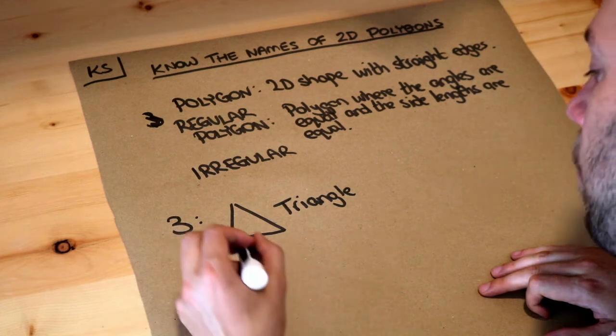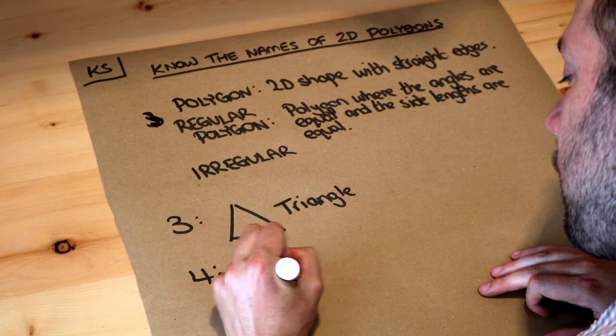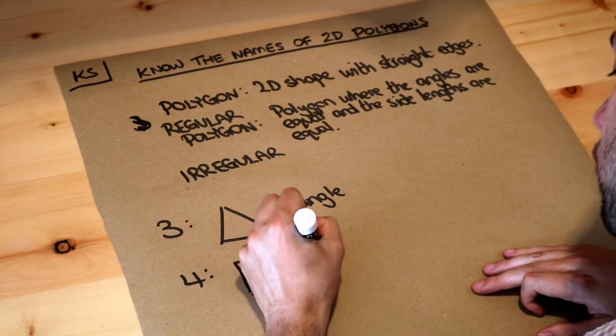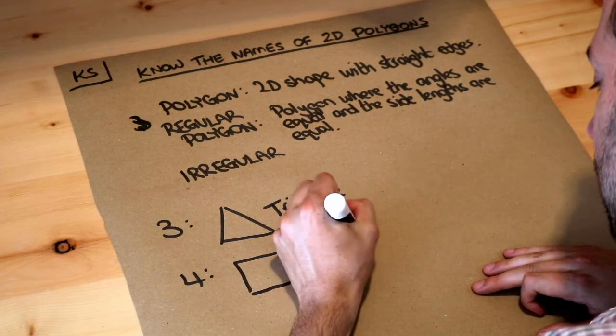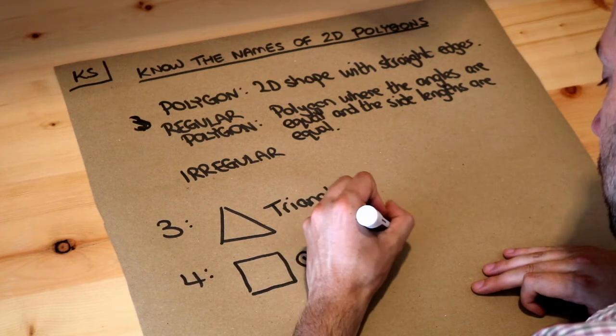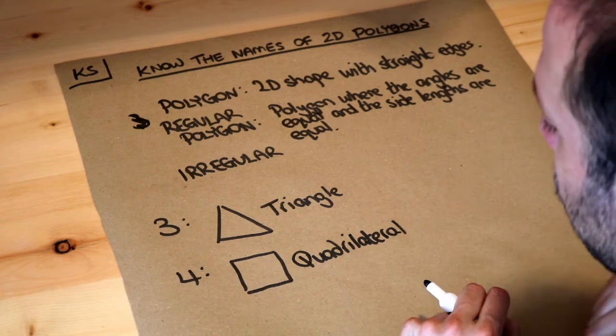If it has four sides, let's just say it's a regular four-sided shape, that is known as a quadrilateral. So this in particular is a square but a quadrilateral in general is any shape with four sides.